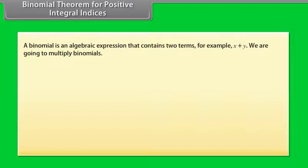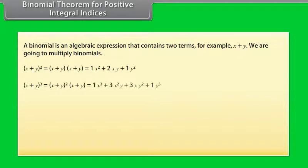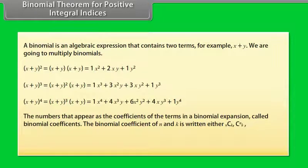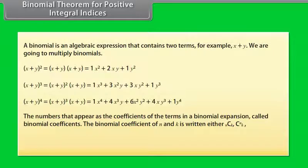Binomial theorem for positive integral indices. A binomial is an algebraic expression that contains two terms. For example, x plus y. We are going to multiply binomials. The numbers that appear as the coefficients of the terms in a binomial expansion are called binomial coefficients. The binomial coefficient of n and k is written either as nCk.